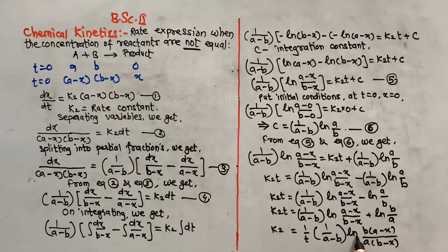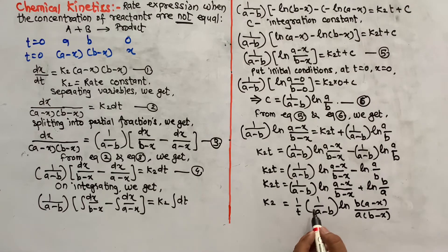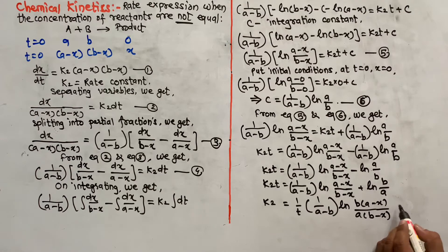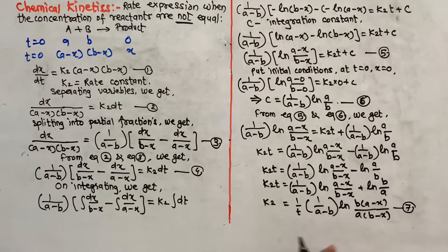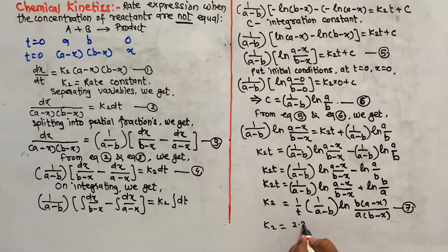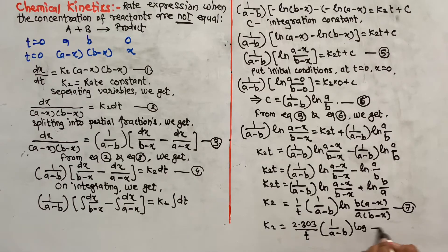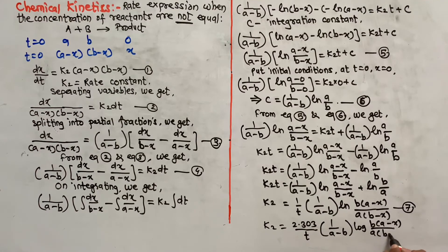This is a natural log. Converting to log base 10, the final rate expression (equation number 8) is: K₂ = 1/T × 1/(a - b) × log[b(a - x) / (a(b - x))]. This is the integral rate expression for a second order reaction with unequal reactant concentrations.